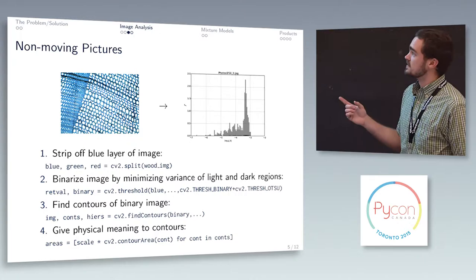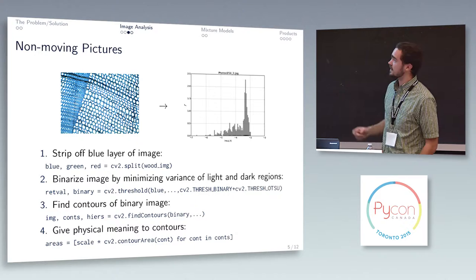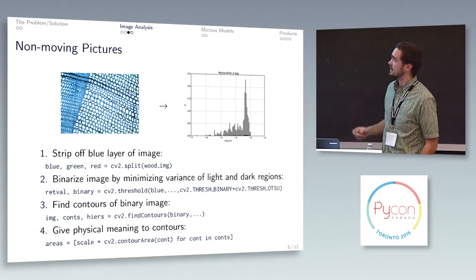So in OpenCV that looks something like this and this is to me very impressive. I'm a non-expert in all of this and the level of abstraction is magnificent here. You can split things with a single function call, you can threshold things with a single function call.